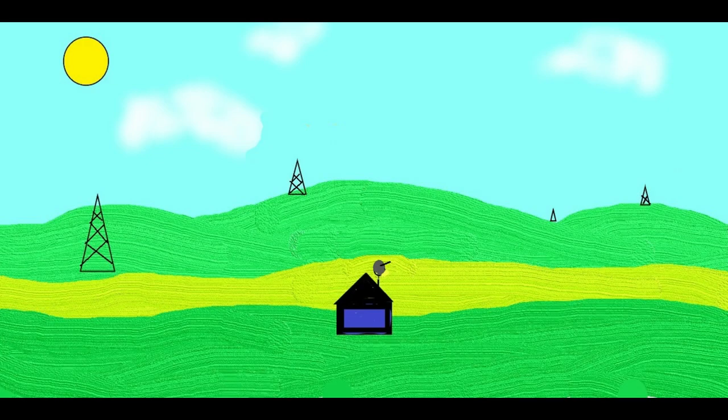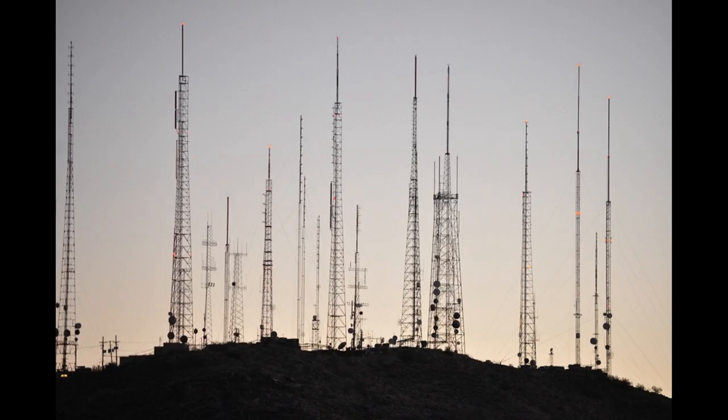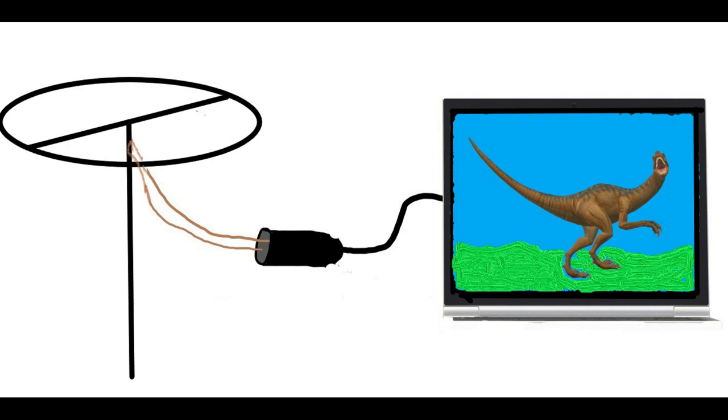Different situations can require different antenna setups for your TV. Some locations require large antennas to pick up distant stations. Sometimes you have plenty of stations, all within maybe 40 miles of your house, but they are located in different directions. In many cases a multi-directional antenna can be your best solution.